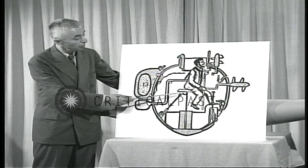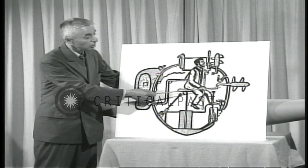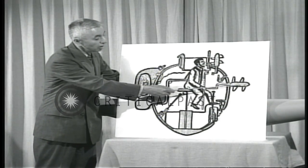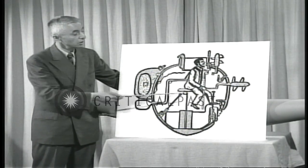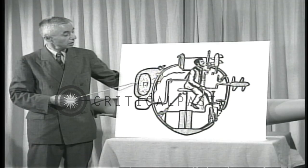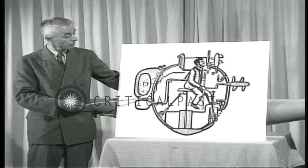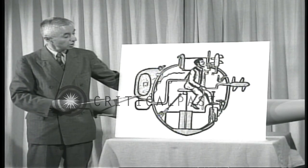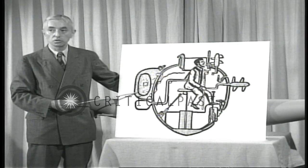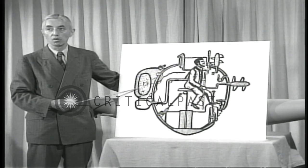He operated the submarine by means of this lever, which turned the propeller, causing the submarine to move. At the rear end of the submarine, he had a bomb, which he intended to attach to the ship itself, causing the ship to blow up.